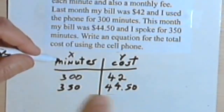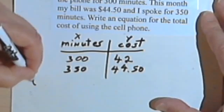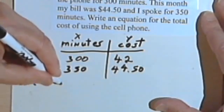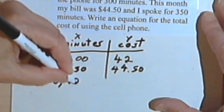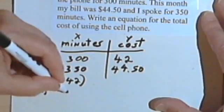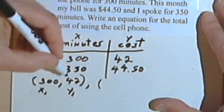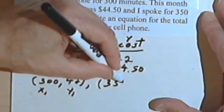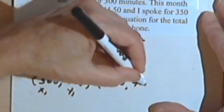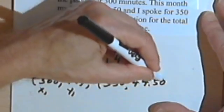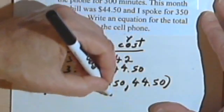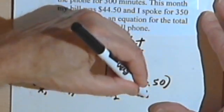And I've also got 350 minutes and 44 dollars and 50 cents. So I've got 300, 42 as x sub 1, y sub 1. And I've got 350, 44.50, and that's x sub 2, y sub 2.